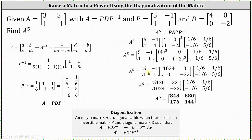Simplifying, we now have the product of three matrices. To determine the product, we multiply from left to right. For the first product: row one, column one is 5 times 1024 plus negative 1 times 0, which is 5120. Row one, column two is 5 times 0 plus negative 1 times negative 32, which is positive 32. Row two, column one is 1 times 1024 plus 1 times 0, which is 1024. Row two, column two is 1 times 0 plus 1 times negative 32, which is negative 32.